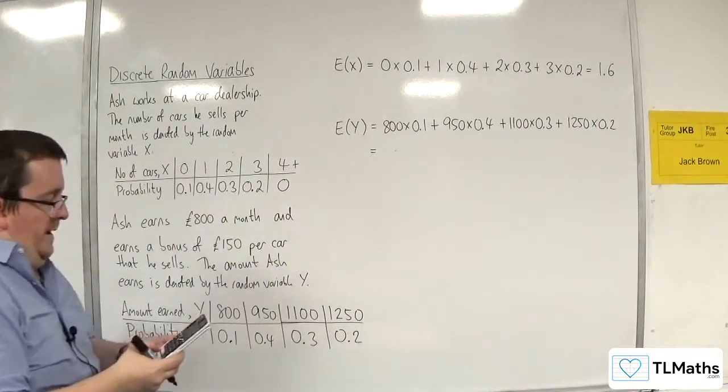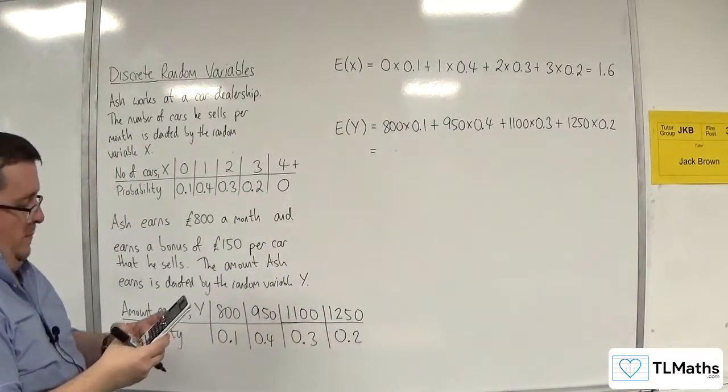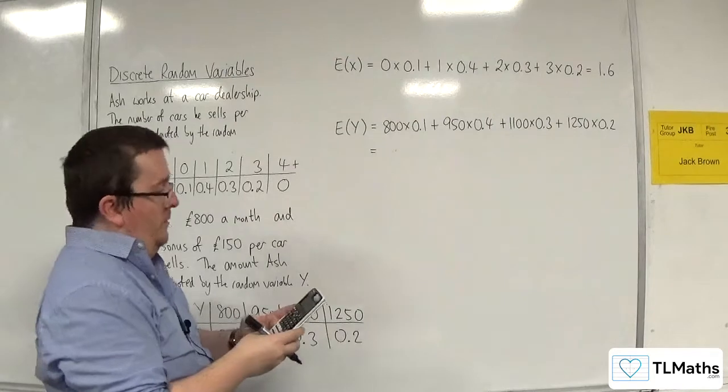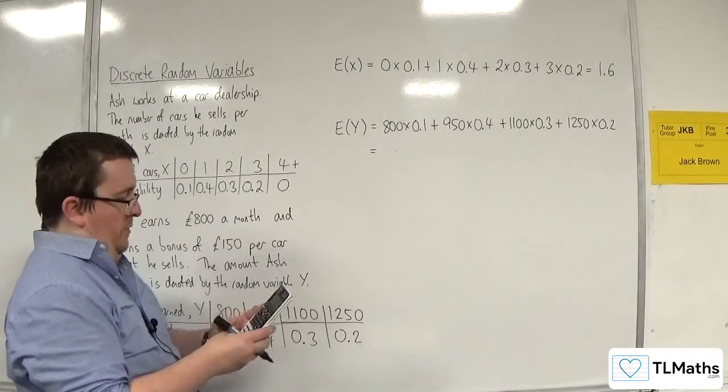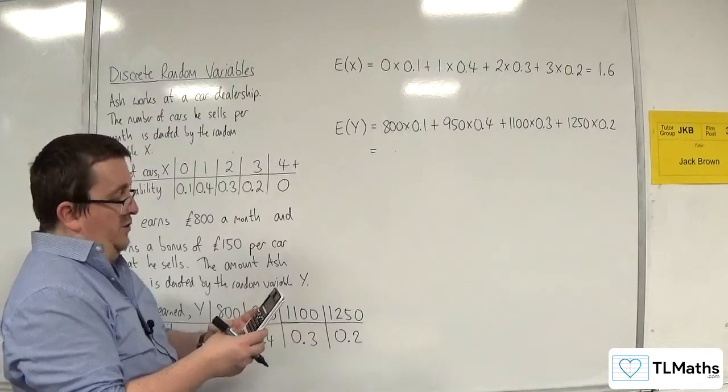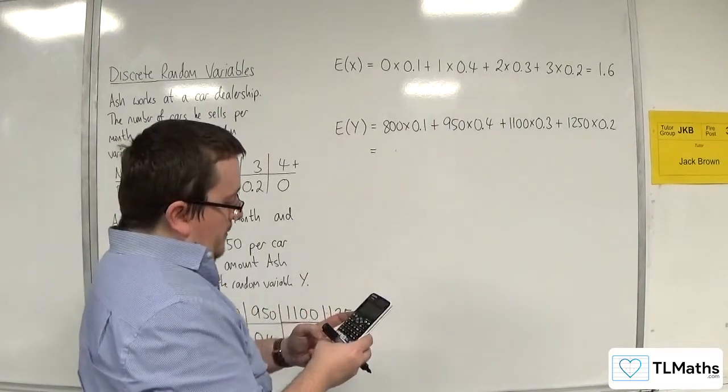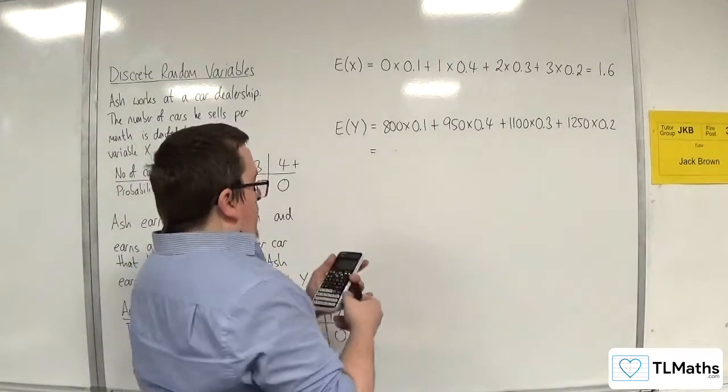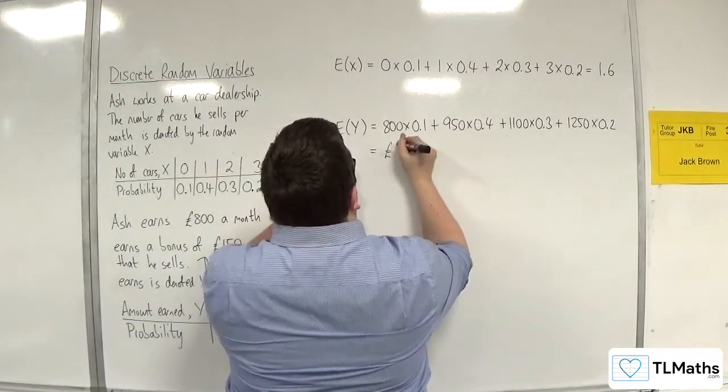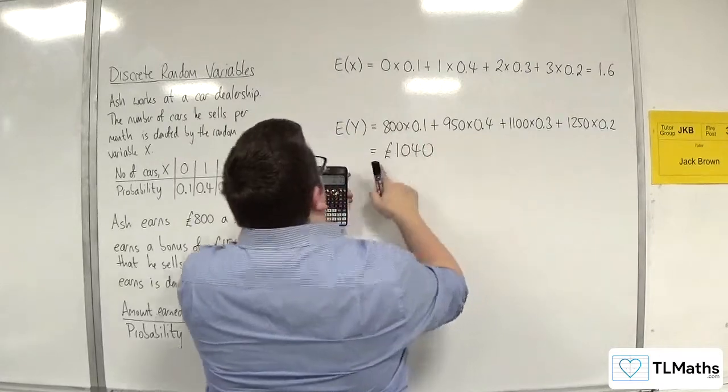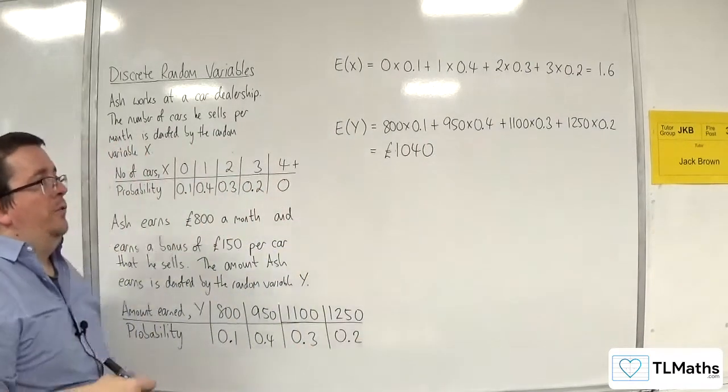So, 800 times 0.1 plus 950 times 0.3 plus 1250 times 0.2. So, that's the mean expected value.